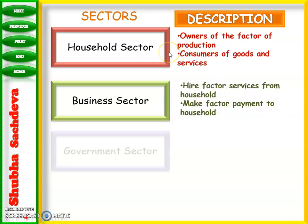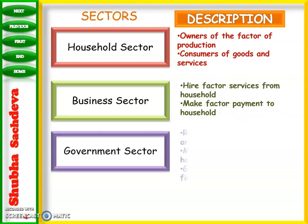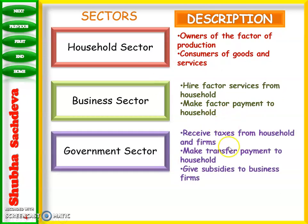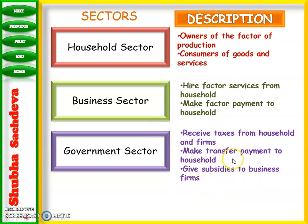The third sector is the government sector. The government collects taxes from both households and the business sector. It also makes transfer payments to households — for example, old age pensions, subsidies to the business sector, or scholarships.